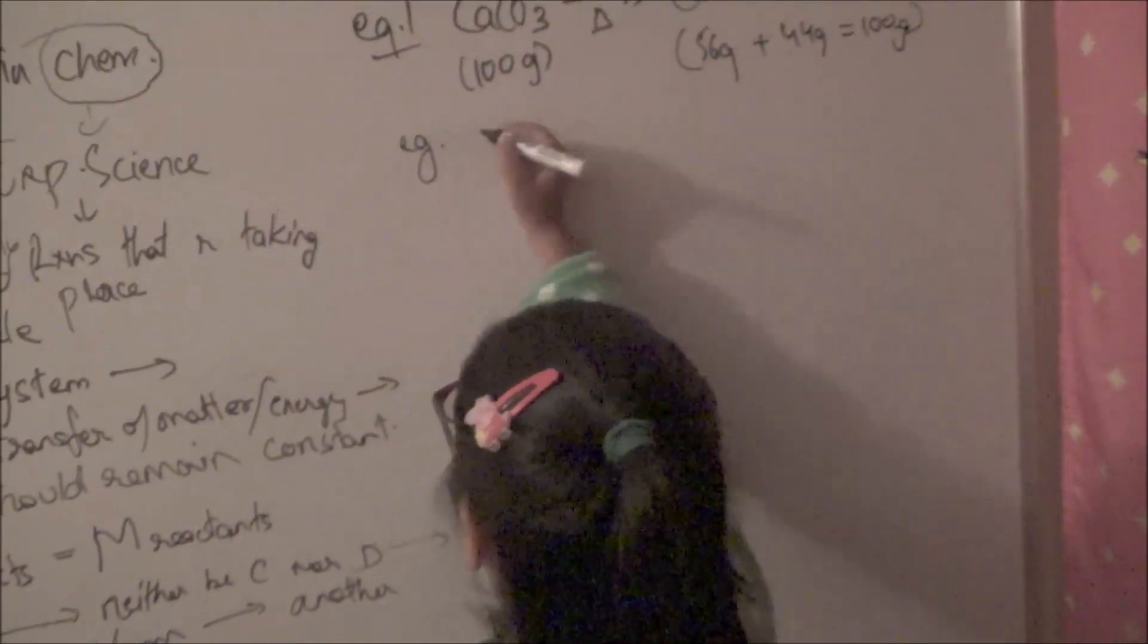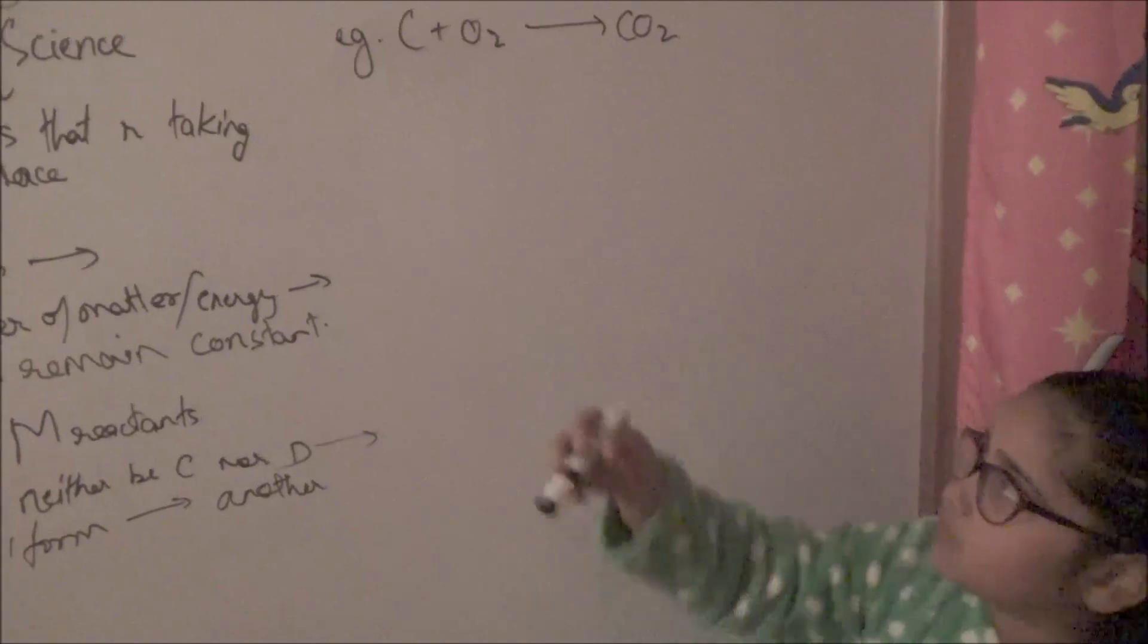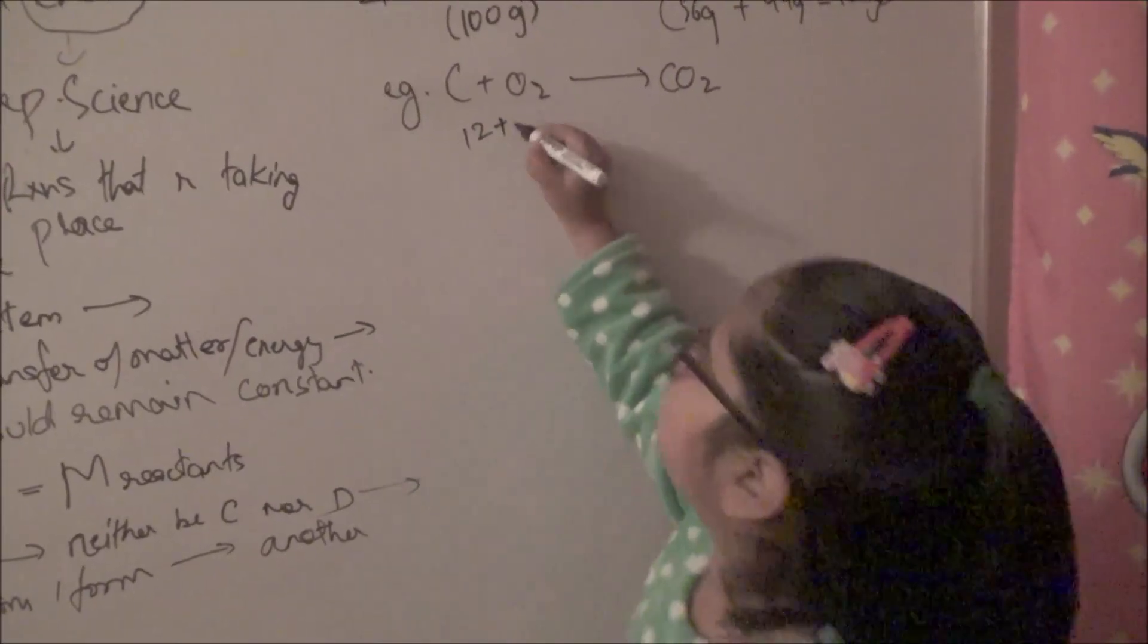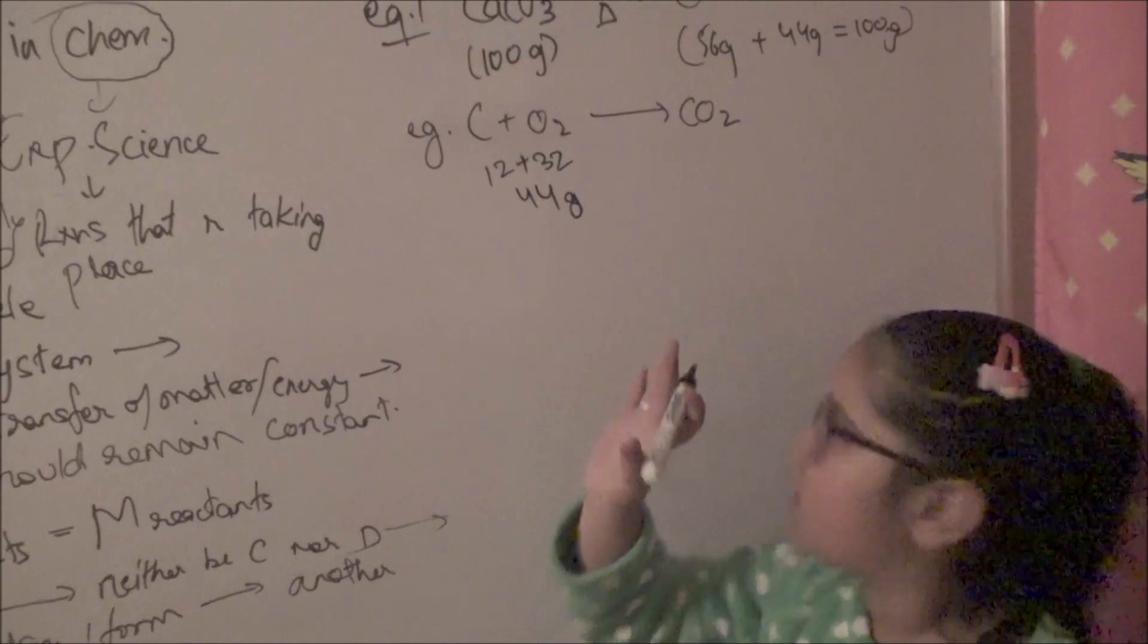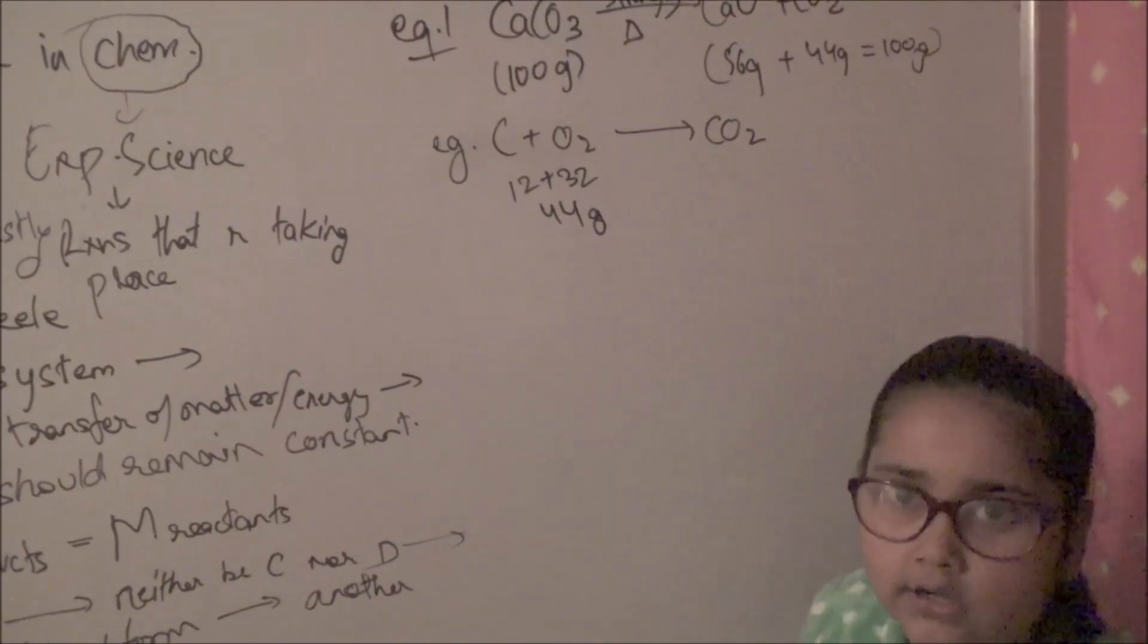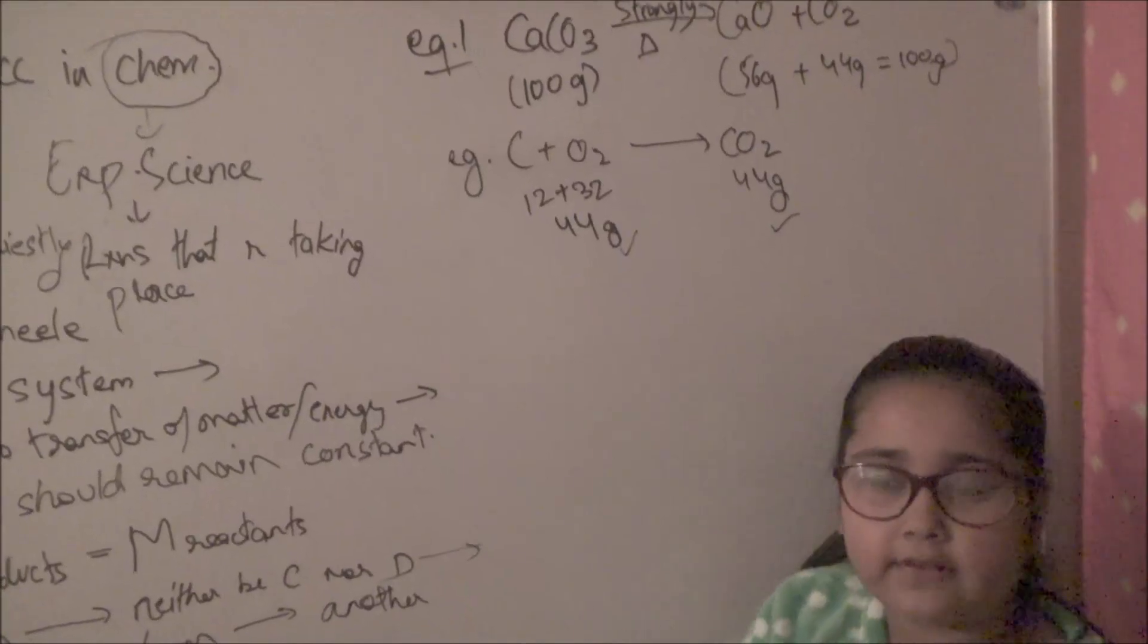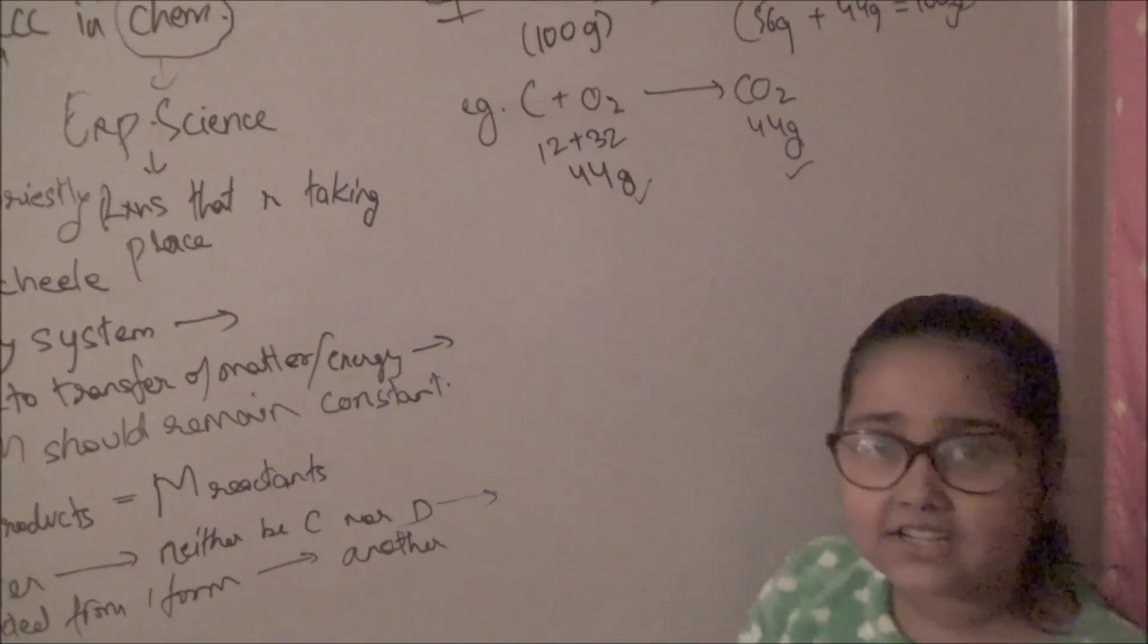Let's take the second example. Carbon plus oxygen gives carbon dioxide. This is an important reaction when we talk about carbon and compounds. We also call it combustion of carbon, burning of carbon in the presence of oxygen. Carbon's atomic mass is 12 plus oxygen is 16 times 2 equals 32, giving 12 plus 32 equals 44g. Carbon dioxide is also 44g. So law of conservation of mass is obeyed as the mass of reactants equals the mass of products.